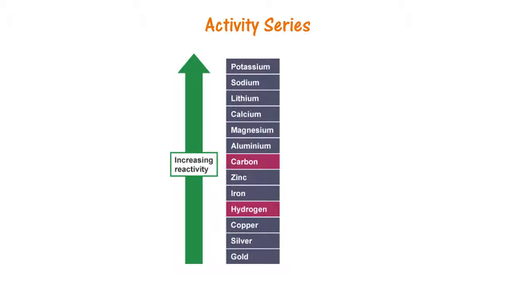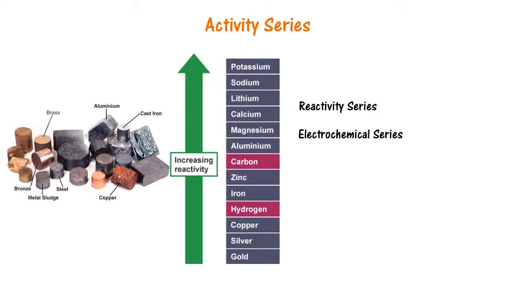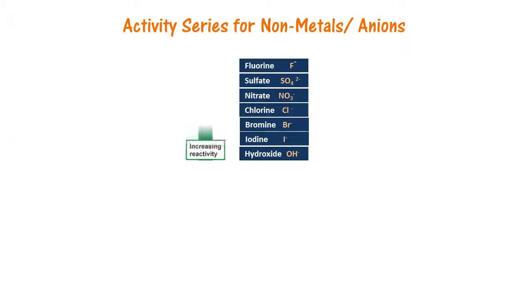The activity series is also known as the reactivity series or the electrochemical series. Since we have all the metals here, it is also known as the activity series for metals or cations. There is also an activity series for non-metals or anions, but we will focus our discussion on metals here.